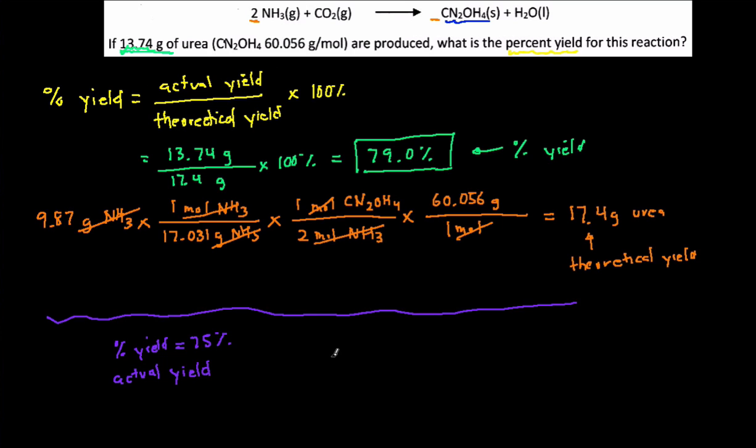So we're going to just substitute numbers in. We have 75% as the percent yield. The actual yield is my unknown. And then the theoretical yield, it's what we solved for earlier, 17.4 grams.